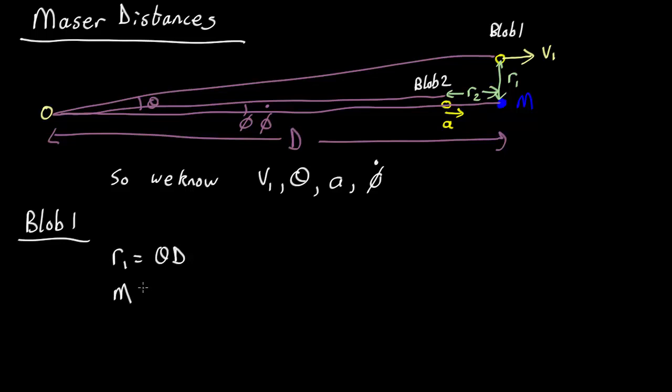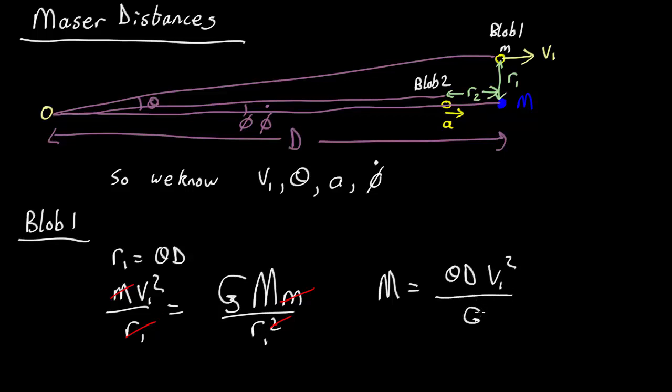The other thing we know is we can balance centrifugal force against gravity. So we know that m of the blob, small m, v1 squared over r1, equals the gravitational force, G big M of the black hole, small m, over r1 squared. So rearranging that, we find that the mass of the actual blob cancels out, one of the r1s cancels, and we get an expression for the unknown mass of the black hole, which is that the mass of the black hole equals r1, which is theta d, times the velocity which we know squared, over G. So the only thing in this equation we don't know is how far away the maser is from the Earth. Okay, so that's a good start, but not enough by itself. We've got two unknowns, d and M, in this equation. We're going to need another equation to solve it, so let's go for blob 2.